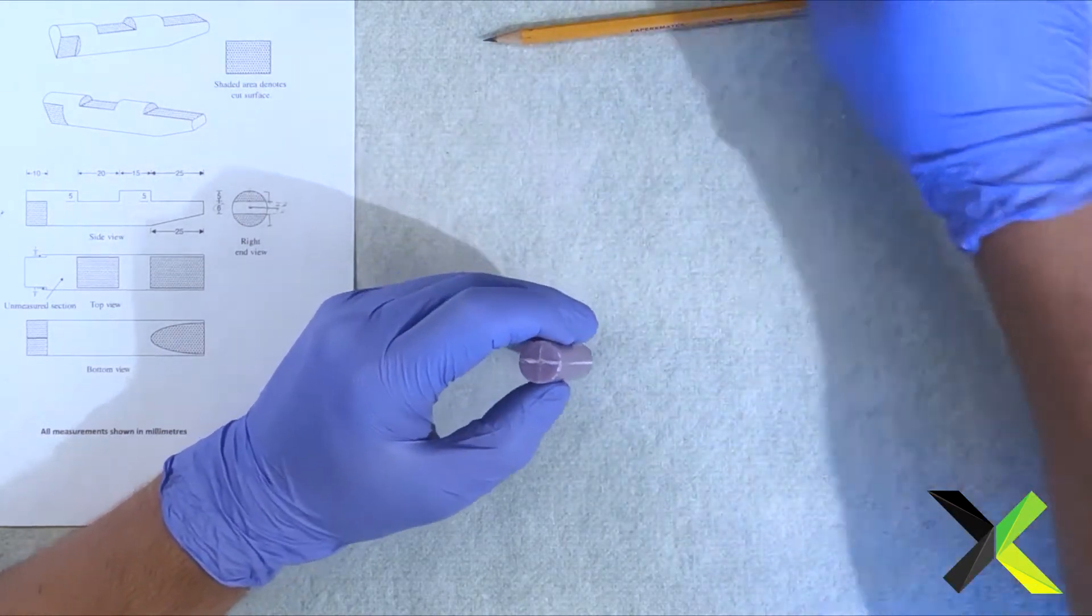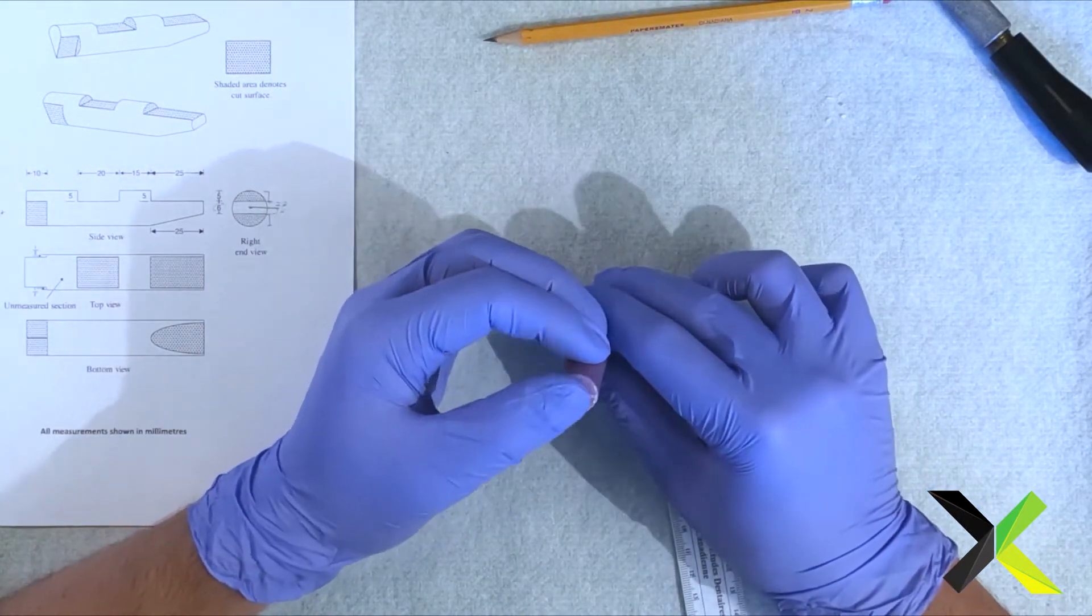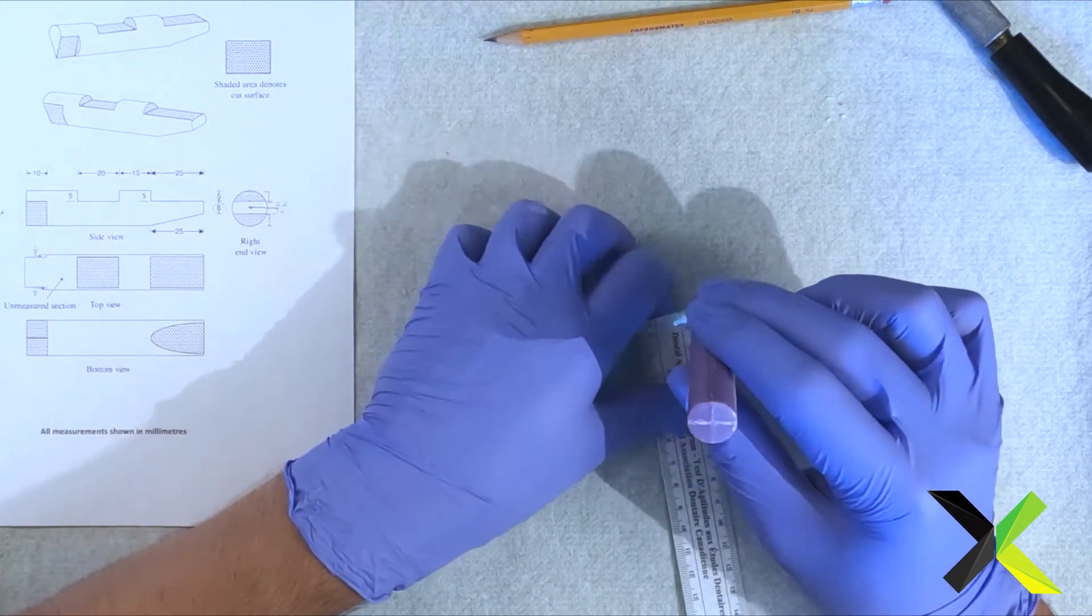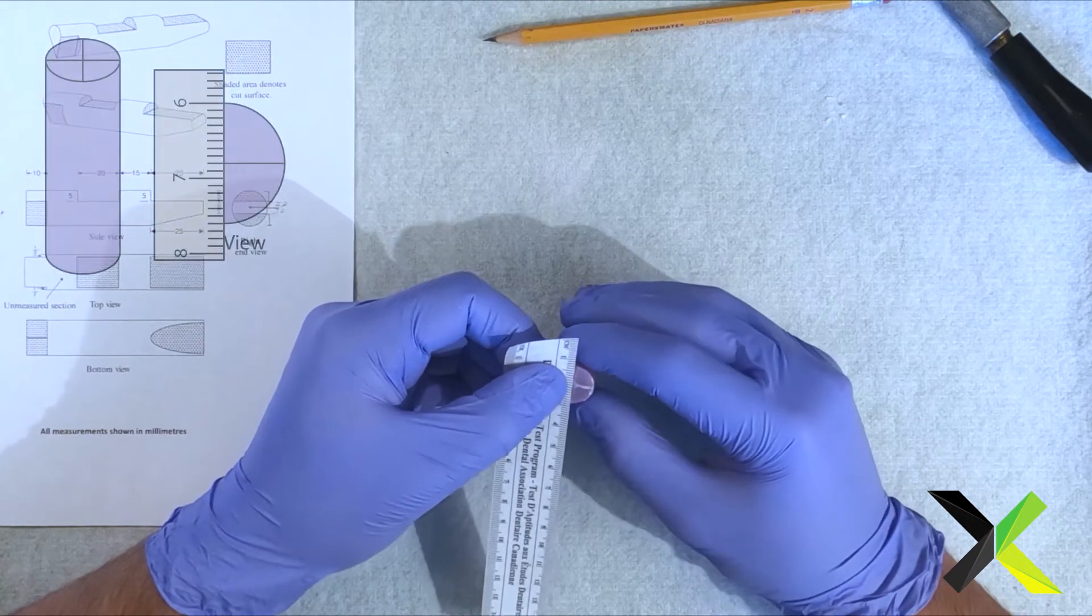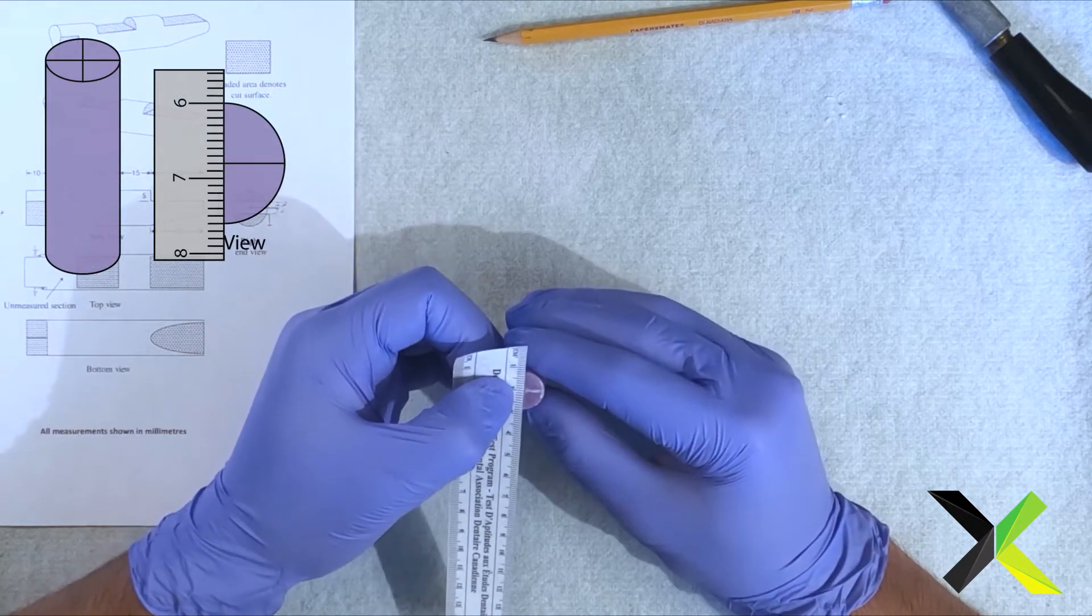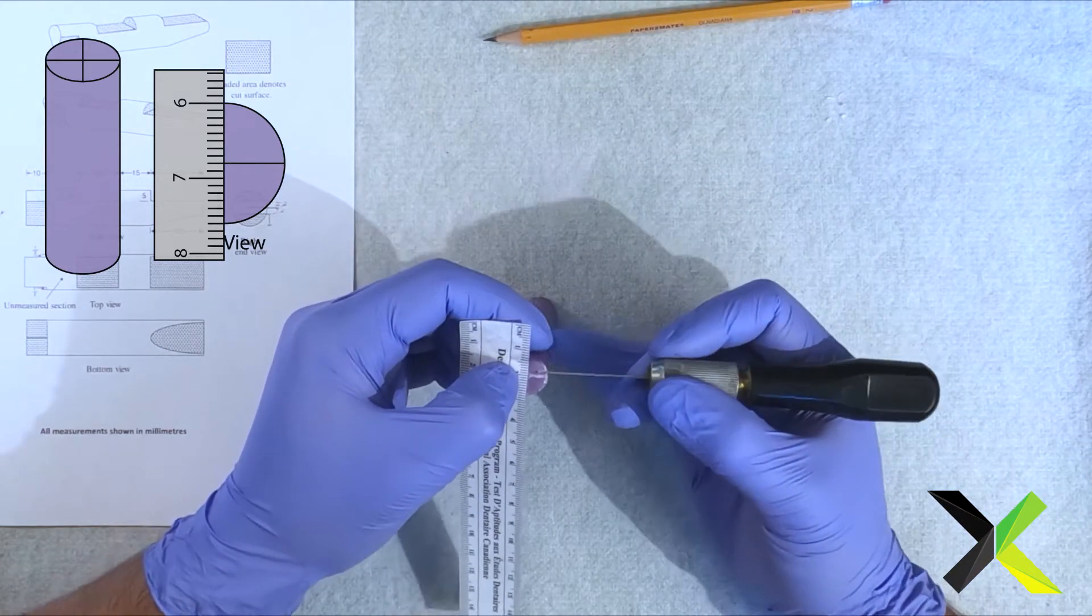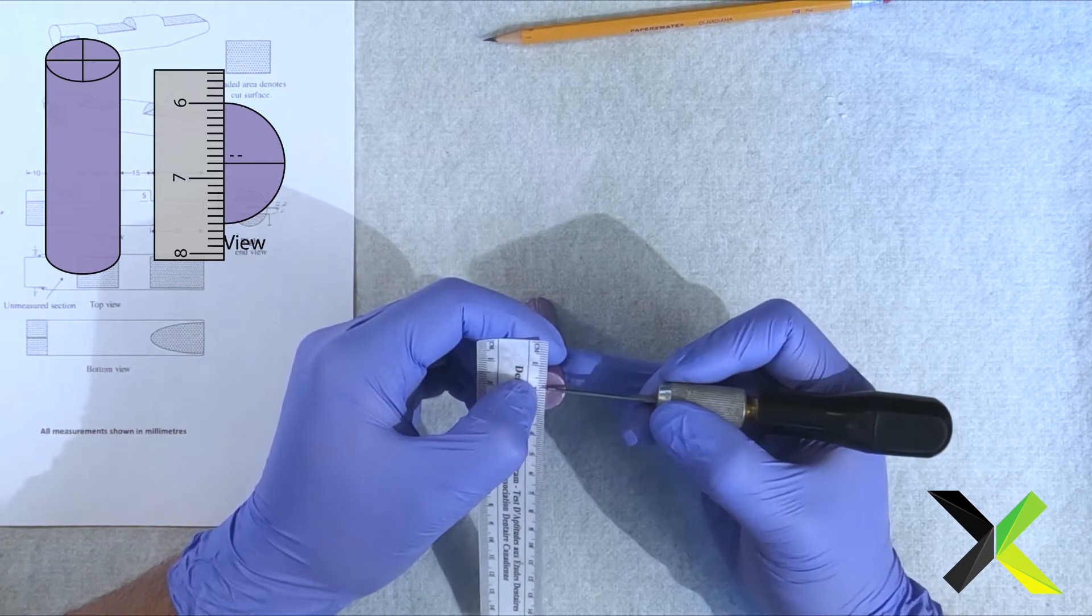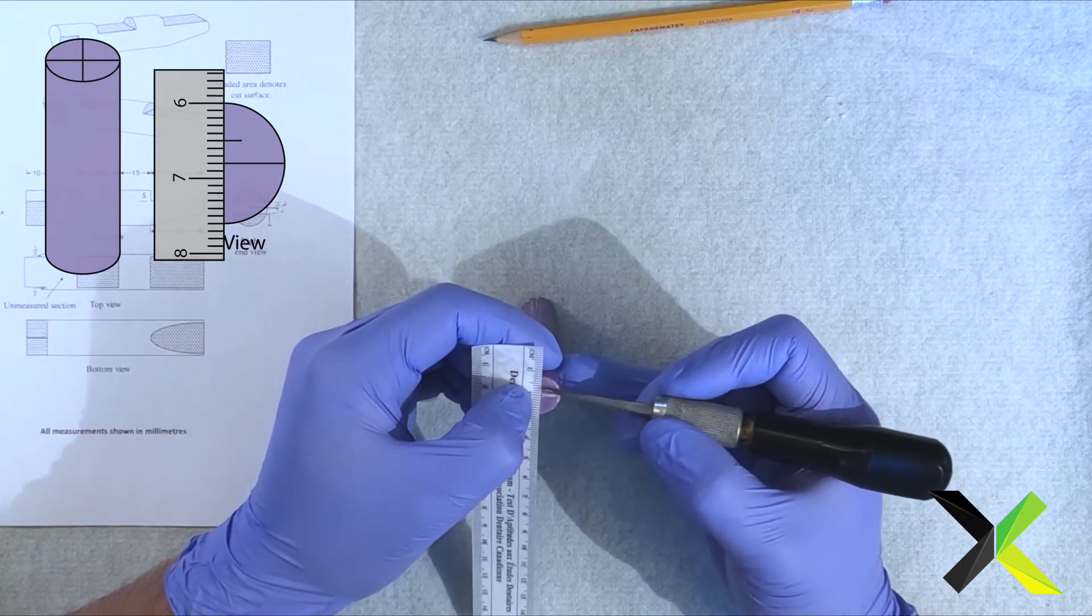Okay, so grab your ruler, decide on which line you want to use as the main reference line. It really doesn't matter but put it in the center here. Hold it just like that, right in the middle. And you grab your knife, and you go one, two, three and make a little line right at the three.